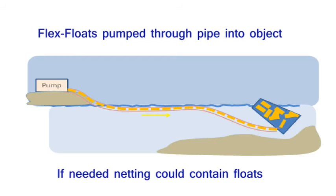Using a specialized pump, flex floats can be propelled with high pressure water through a pipe directly into the submerged object. If needed, netting would prevent any leakage of floats.